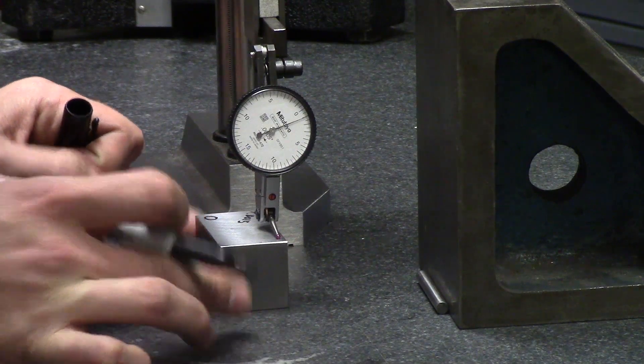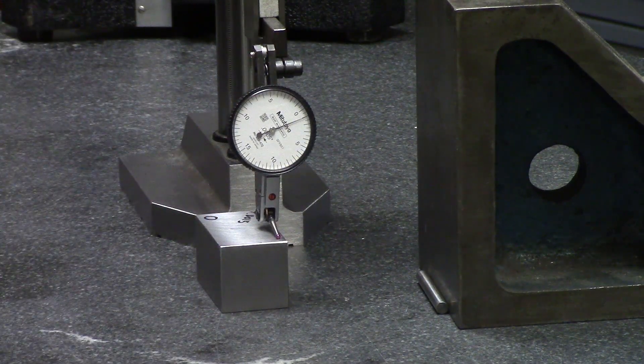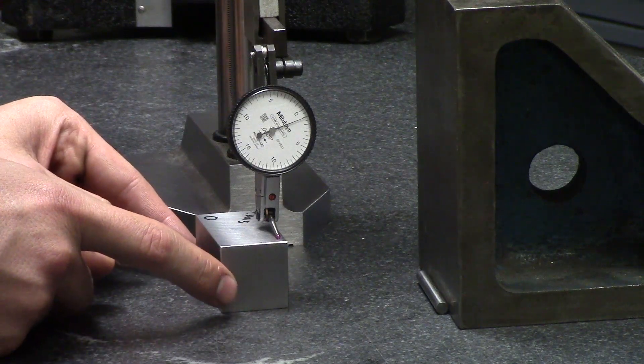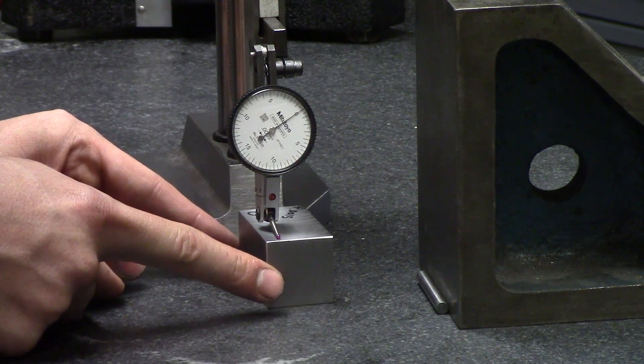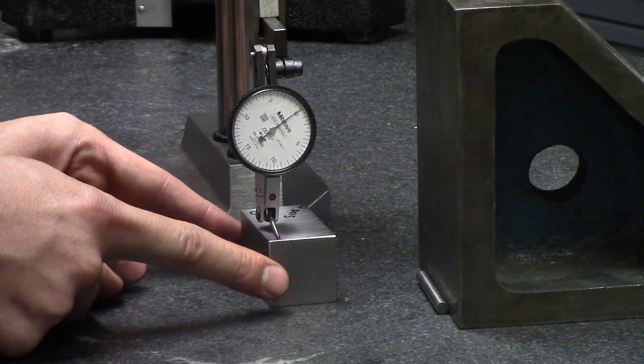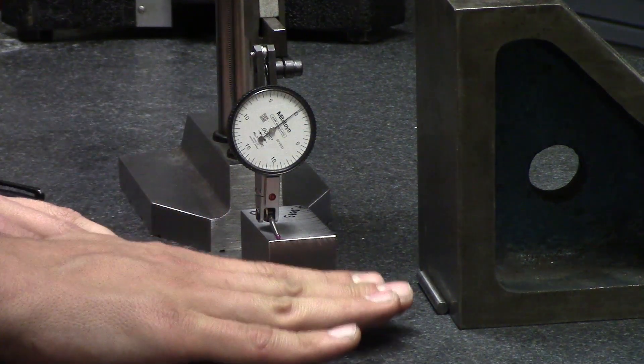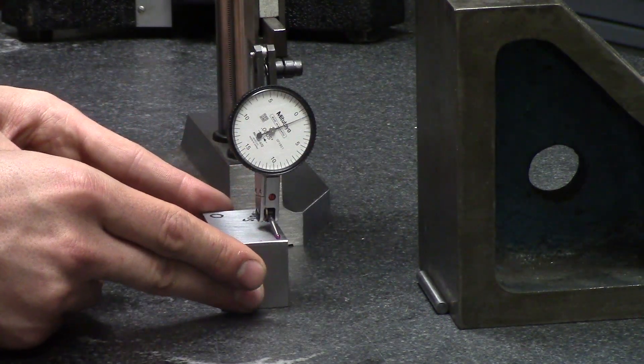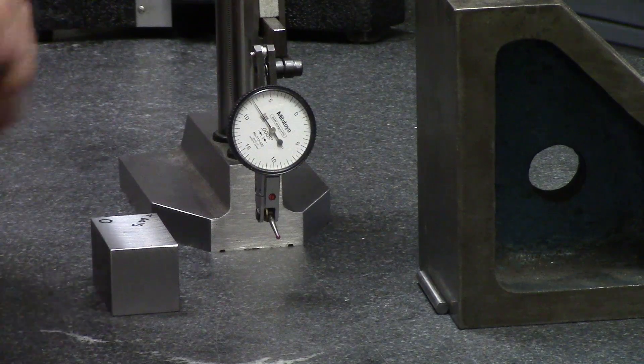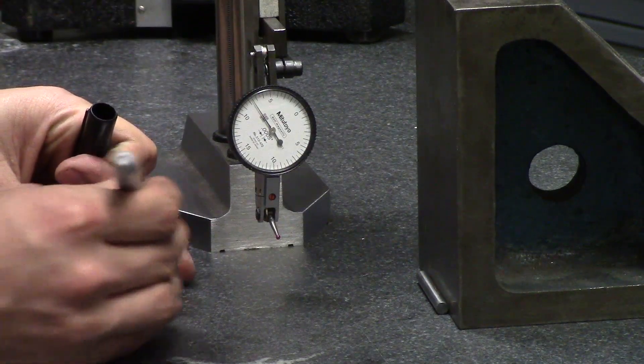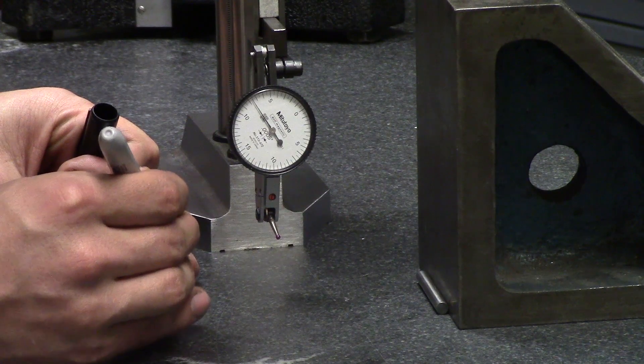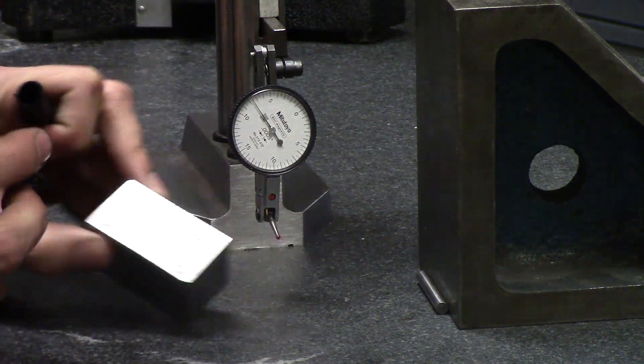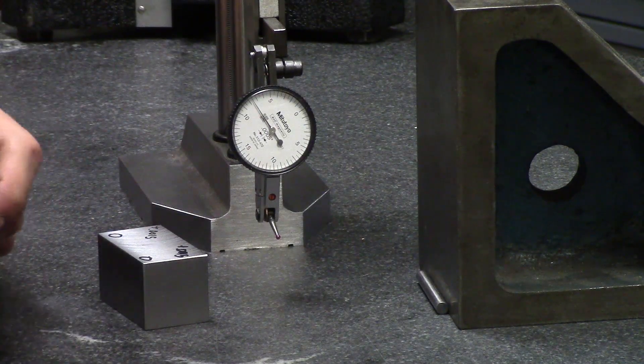Then I'm going to run down to the other side of the part and this is not checking for perpendicularity this is checking for parallelism. So that's positive one thou and that's zero. So looking at this part it's actually kicked up. It's positive one thou five tenths. So I'm going to write on the other side of the block zero and plus point oh oh one five. So as you can see that is parallel and you can flip the block around 90 degrees and do the same thing but on to the next step we're going to check for perpendicularity.